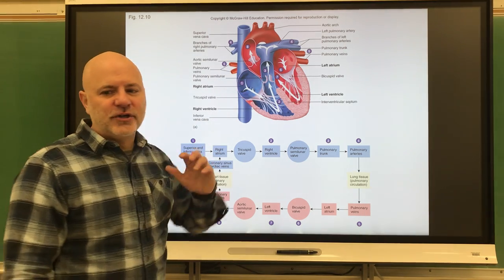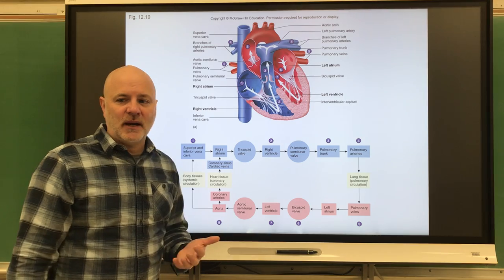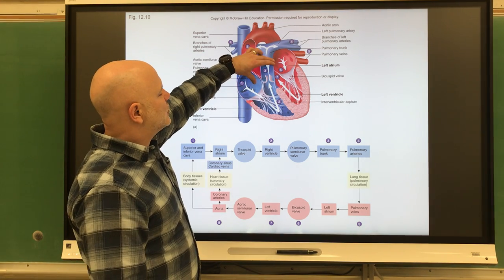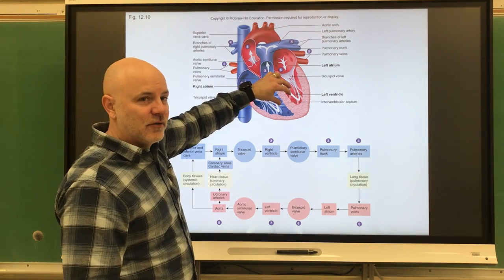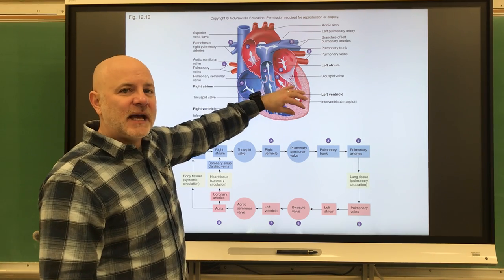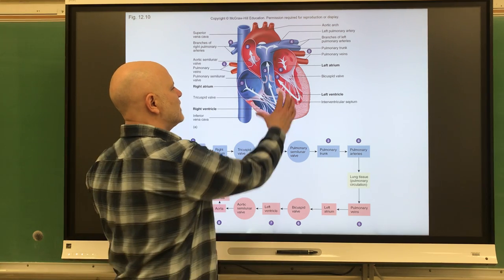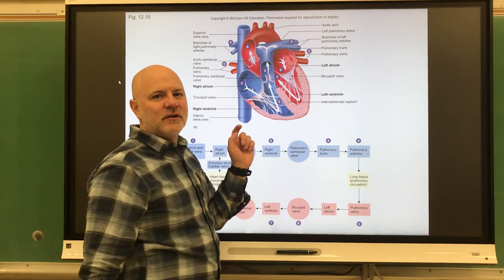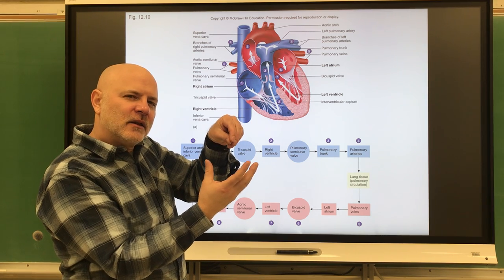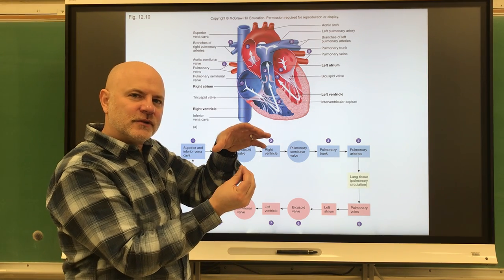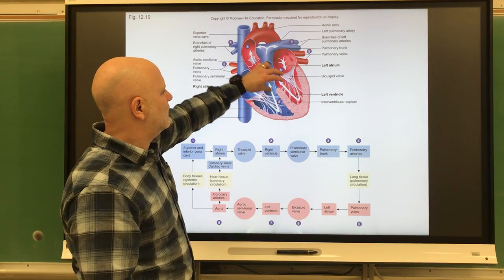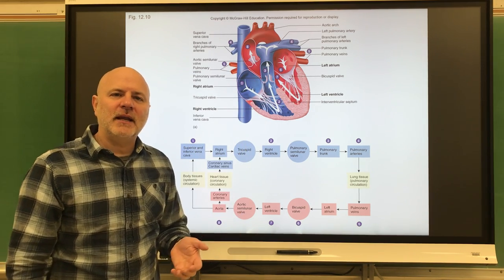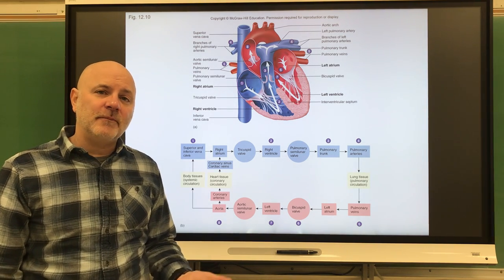Both atria are going to contract and relax at the same time, and both ventricles are going to contract and relax at the same time. When the atria are contracting, they are pushing blood down into the ventricles, so the ventricles have to be relaxed for that to occur. When the ventricles are contracting, they're pushing blood up and out of the heart, while blood is filling into the atria. So the sequence is: atria contract, then ventricles contract, then atria contract, then ventricles contract.